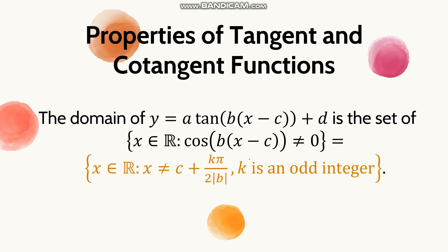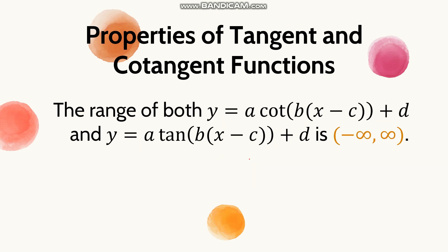For tangent, we remove values that make cosine equal to 0. The domain formula is: x is an element of real numbers such that x is not equal to c plus k·pi over 2 times the absolute value of b, where k is an odd integer. For the range, there is no restriction — both tangent and cotangent have a range of all real numbers, from negative infinity to positive infinity.